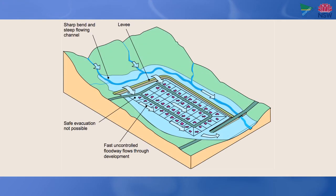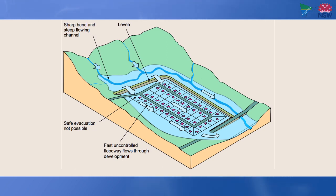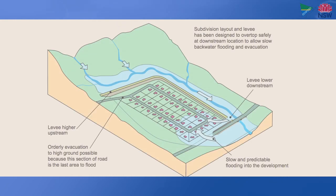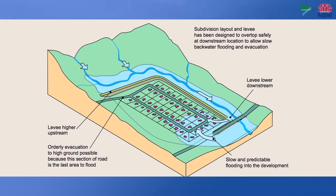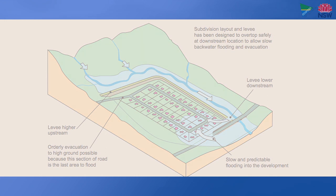A levee could be constructed around the subdivision. However, construction and maintenance costs of levees can be high, and a levee can be breached during storm events which exceed the design height of the wall or bank. This results in the subdivision quickly flooding, and the only evacuation route quickly cut by swift flowing flood water, making evacuation difficult. By simply adjusting the design height of the levee, it may be possible to provide more time to evacuate an area safely, enabling the land to still be used for a new subdivision. So the risk is reduced but never totally eliminated.